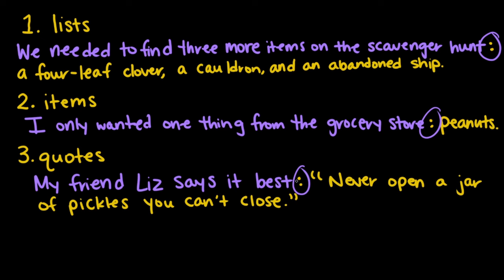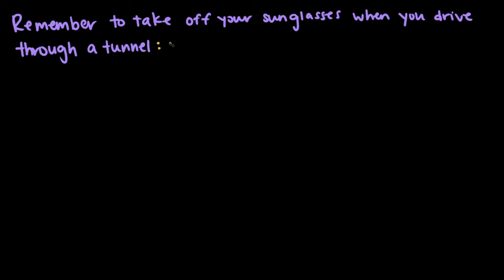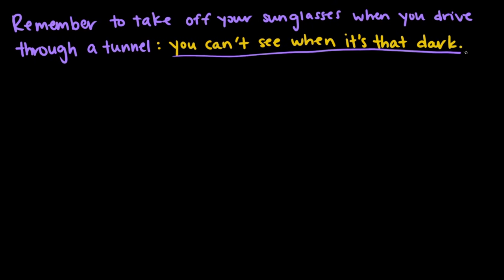There's one final case of the linking function of the colon to cover in this video. Colons can sometimes introduce an independent clause to another independent clause — that's pretty rare. Usually that's the job of a comma and a conjunction, or maybe a semicolon. But it's still important to know even the things that don't happen all that often. Something like: remember to take off your sunglasses when you drive through a tunnel — you can't see when it's that dark. The colon shows that the second part is an explanation of why you need to take off your sunglasses. This is one type of sentence where it makes sense to have a colon between two parts that could each stand alone. The second part explains the first part.